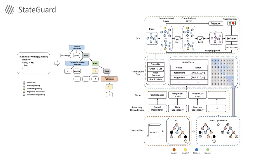To address this issue, we introduce State Guard, a novel deploying-based framework that uses graph convolutional networks to detect these defects.